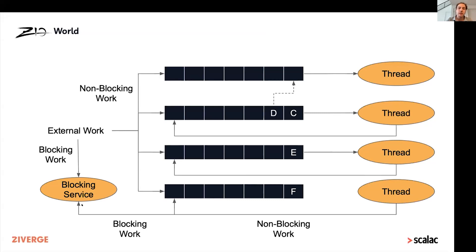That was a feature that ZIO actually pioneered in ZIO 1.0 with the blocking service, later incorporated in the Cats ecosystem — originally in the Linebacker project, then brought in with Cats 2.0 and this blocker thing that passed around everywhere, and then more natively supported in Cats Effect 3.0. Because we've been doing this for all this time with ZIO, we've learned things about how to do it better in ZIO 2.0.